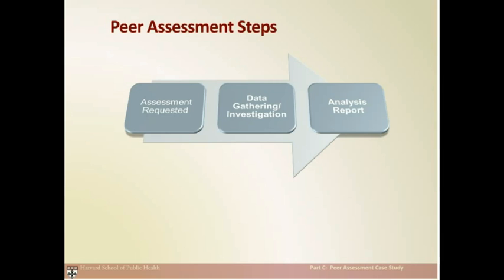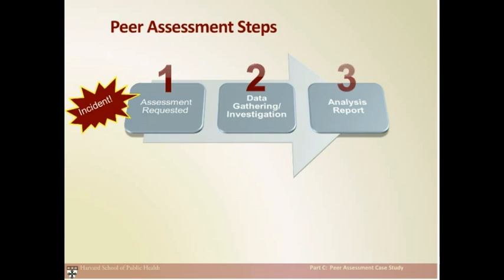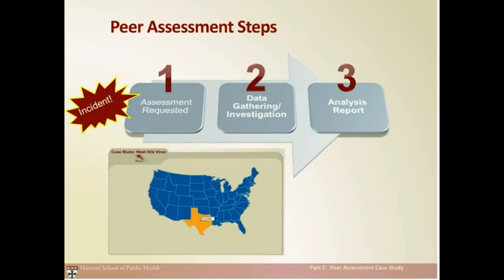The peer assessment method has three steps. After an incident or disaster event occurs, an assessment request is made, usually by a response participant or administrator. The next step involves data gathering and investigation of the incident circumstances and the response activities, including barriers and challenges. The final step ends with an analysis report that summarizes the peer assessment findings and contains recommendations for future responses. To help understand the peer assessment method, we'll use the West Nile virus case study presented in Module 1.